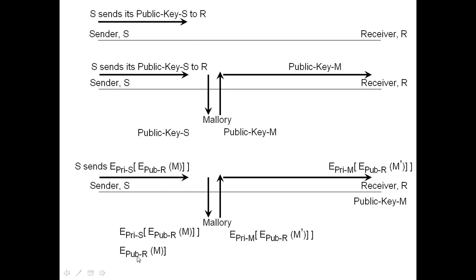Malorie cannot decrypt further because Malorie does not know the private key of the receiver. So the actual message is not yet revealed to Malorie. Malorie could subject this to some cryptanalytic attacks and figure out the message M, but as it is, Malorie cannot figure out what message M is. So this provides confidentiality — Malorie cannot find out what message M is.